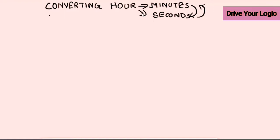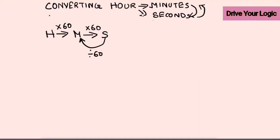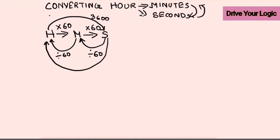Before you start, remember this key tip: when converting hour to minute, multiply by 60. Minute to second, multiply by 60. Going back — second to minute, divide by 60; minute to hour, divide by 60. If you go from hour to second directly, that's two steps of 60, so multiply by 3600. Returning from second to hour, divide by 3600. Whatever you do going forward, do the opposite going back.